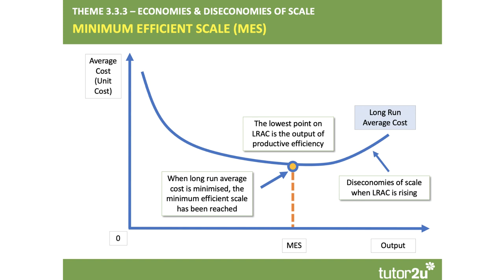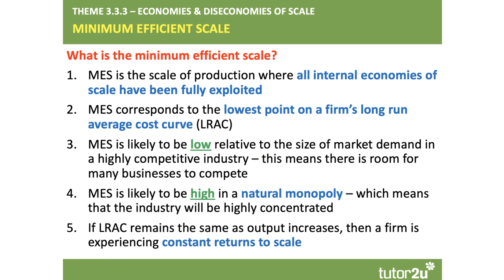A linked and important concept is the minimum efficient scale, or MES. The minimum efficient scale is defined as the lowest point on a firm's long-run average cost — the lowest feasible unit cost of production. The shape of the cost curve tells us how big the output has to be before the MES is reached. It's the scale of production where all internal scale economies have been fully exploited.